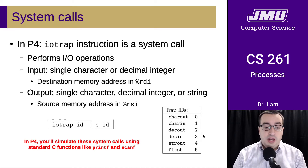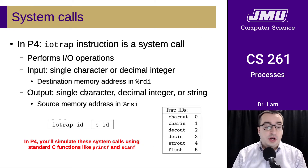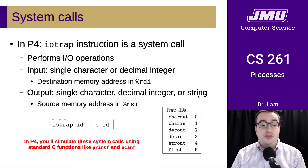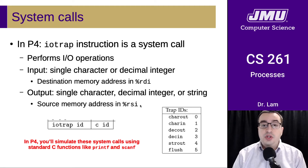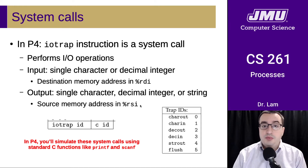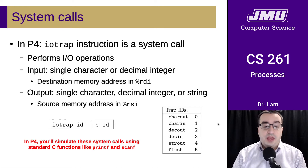There are six TRAP IDs, or system call IDs. For input, there is char in, which is one, and decimal in, which is three. There are also three forms of output: you can output a single character, a single decimal integer, or an entire string. This is controlled using a memory address passed via a register.